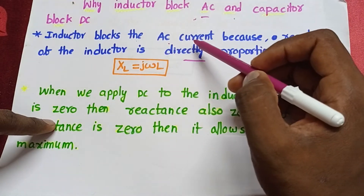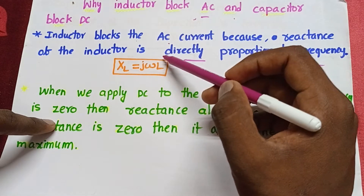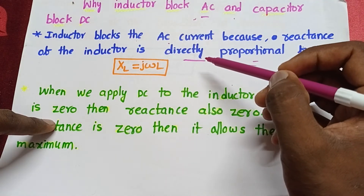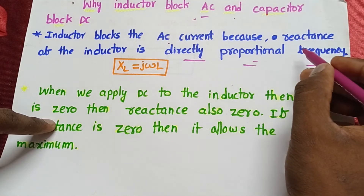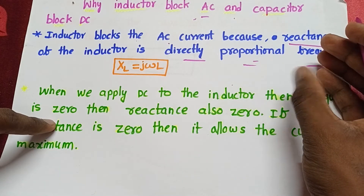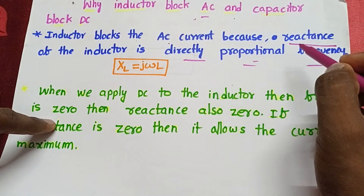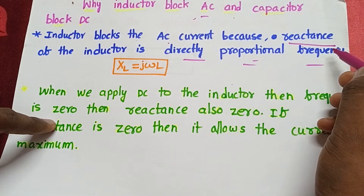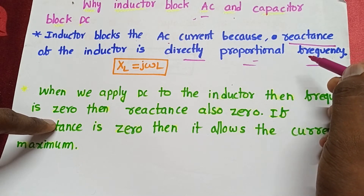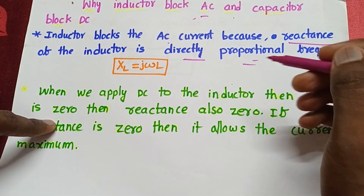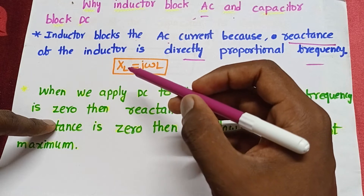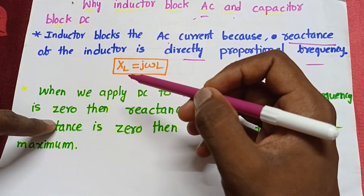The inductor blocks AC current because the reactance of the inductor is directly proportional to the frequency. Reactance is nothing but the opposing force of current in an inductor. If the frequency increases, the reactance also increases. If the frequency decreases, the reactance also decreases. This is the relation between reactance and frequency of an inductor.